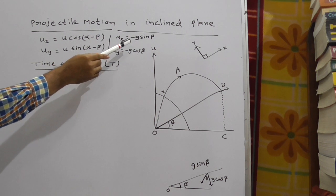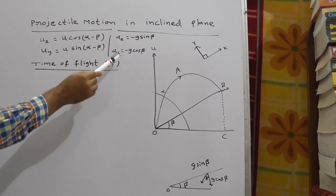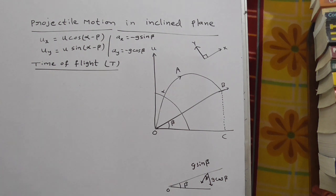Then ax is minus g sin beta. Ay is minus g cos beta. Observe this diagram clearly.